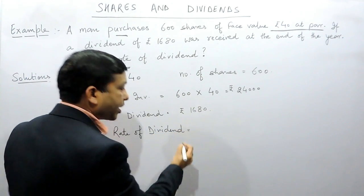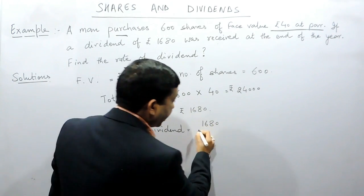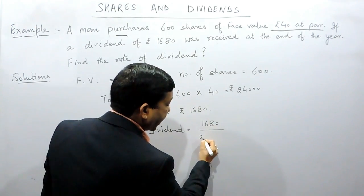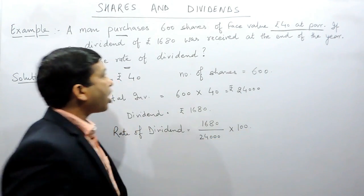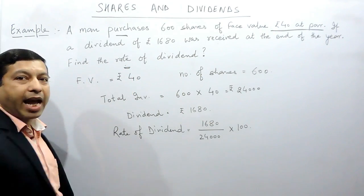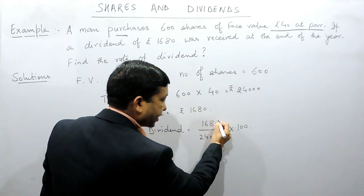The total dividend, that is rupees 1680, divided by the investment, that is rupees 24,000, multiply by 100. When we talk about the term rate, it has to be calculated in percentage. So once we cancel it out...